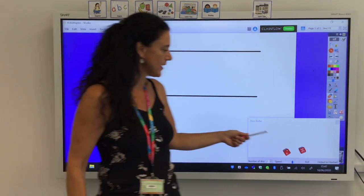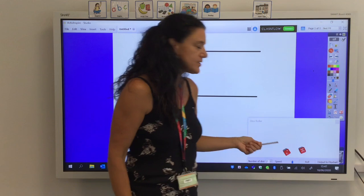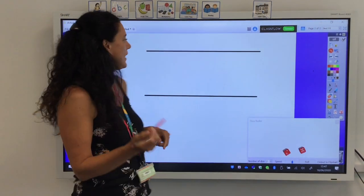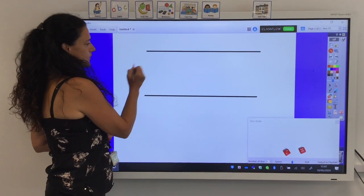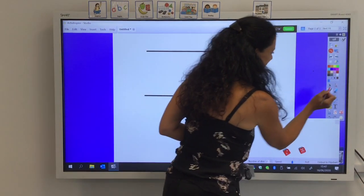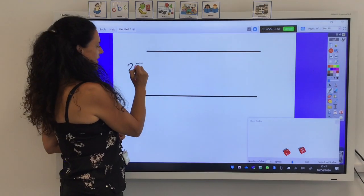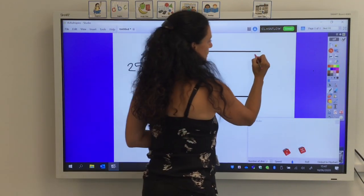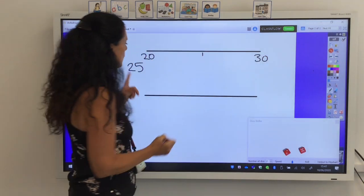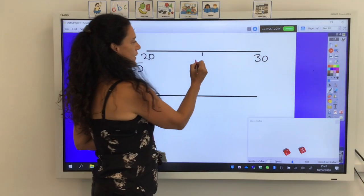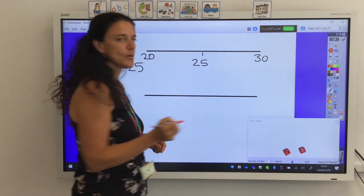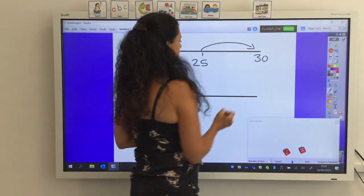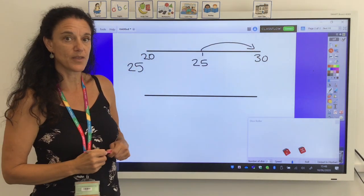I've just rolled again and this time I got a 2 and a 5. So I can use this as 25 or 52. If I start with 25, I can round down to 20 or up to 30. Now we find the midway point, which is in fact our number, 25. And this is what we need to remember. When we end with a 5, we always round up. So 25 would be rounded up to 30.